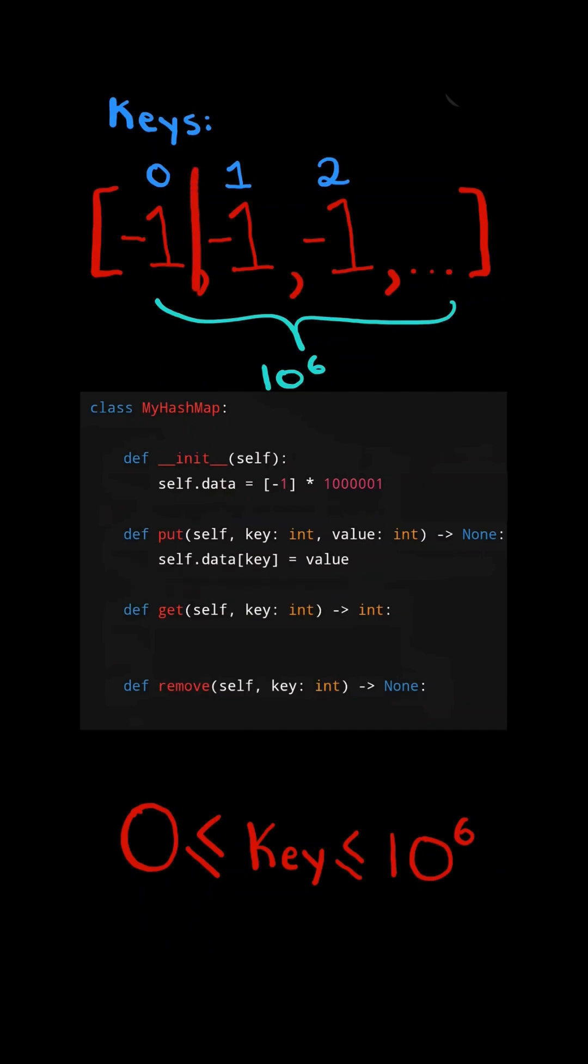And then in the put method, we could just index in the array using the key and set its value. So assume for example, we want to put the key 1 and value 5. We use the key to index in the array at index 1, and we update the value to 5. And we can do a similar idea in the get method. We use its key to index into the array and return the value.